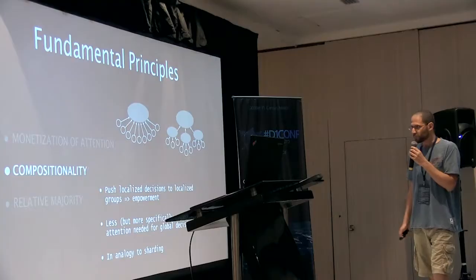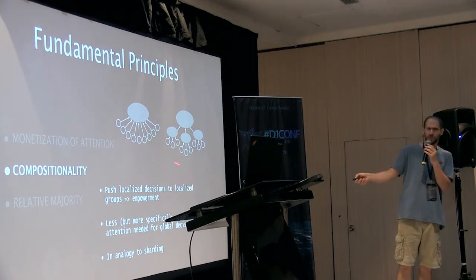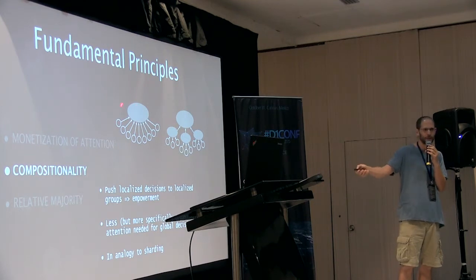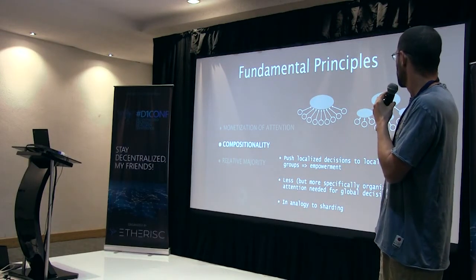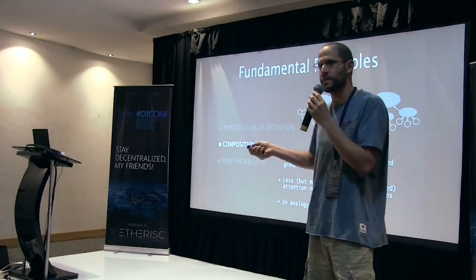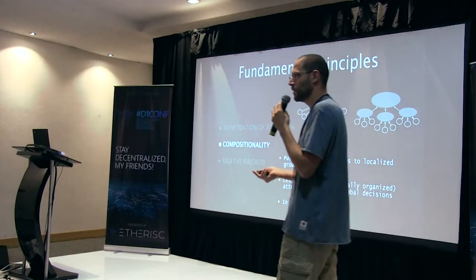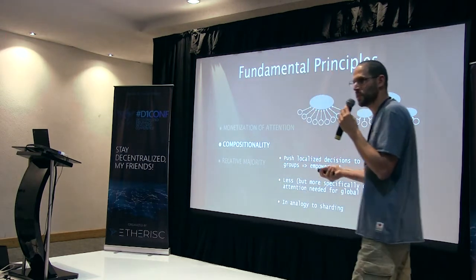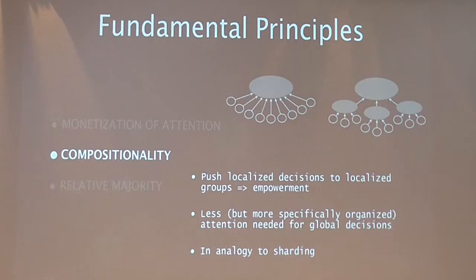Now, compositionality. What do I mean by that? Rather than formalizing it, let me show a picture. This is a non-compositional system and this is a compositional system. Compositionality pushes localized decisions to localized groups. For example, in a fund management or insurance fund management system, you can empower some decisions to a smaller circle — smaller, localized decisions can be taken by localized groups, which is much more efficient. And even global decisions that occur at a higher level are actually more efficient in this structure.